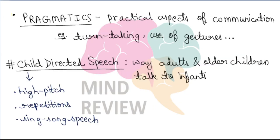The fourth term is pragmatics. Pragmatics refers to the practical aspects of communication. You have understood the basic units of sound and meaning, and you know the rules for combining words — but there are also practical aspects to communication. For example, when you talk to someone, you need turn-taking — you can't just keep talking; the other person must also get a chance to speak. Using hand gestures while speaking, using facial expressions — all of these come under the practical aspects of communication, which we signify via pragmatics.